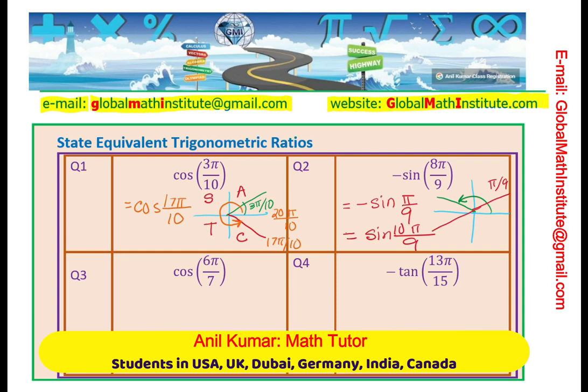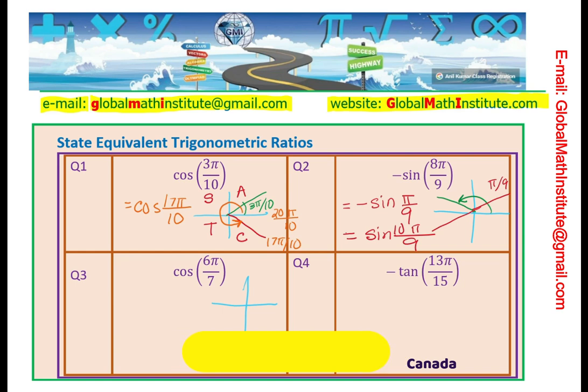Next question here is cos(6π/7). I would like you to pause the video at this time and answer this question. Strategy is very clear. First step, figure out where you are in which quadrant so that you know whether it is a negative value or a positive value. You may even write the cost rule which can help you. So let's write down the cost rule.